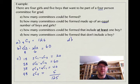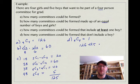Part D says how many committees could be formed that don't include a boy. Well, that means it's going to be all girls, so you would call that 4C4, and the answer to that one is 1. Now, another way to get that answer is to take a look at how many committees we have all together, 126. 125 of them include at least one boy, which means the difference, 126 minus 125, would include no boys, and that would be 1.